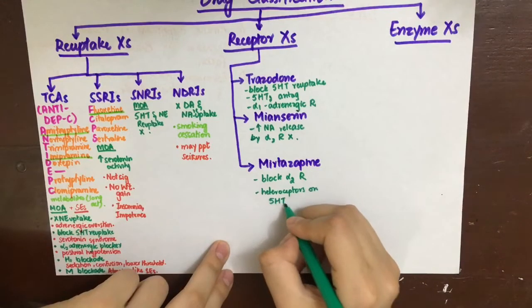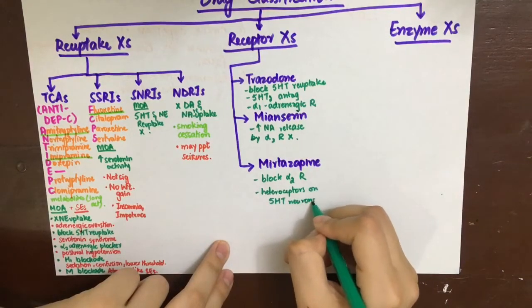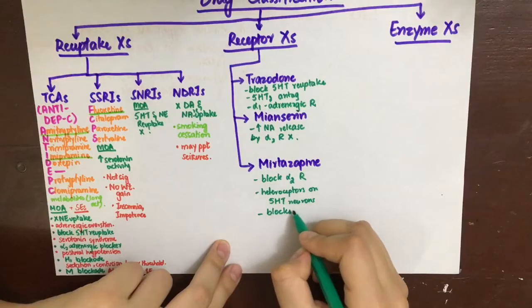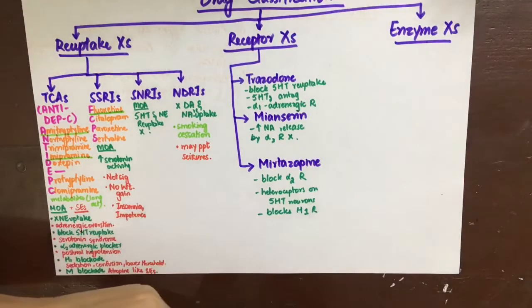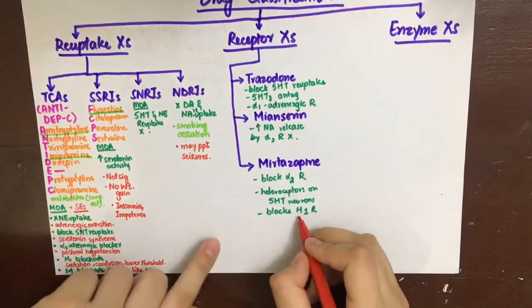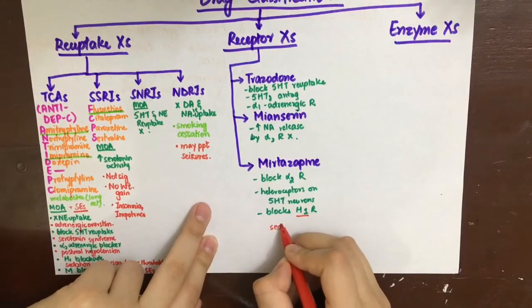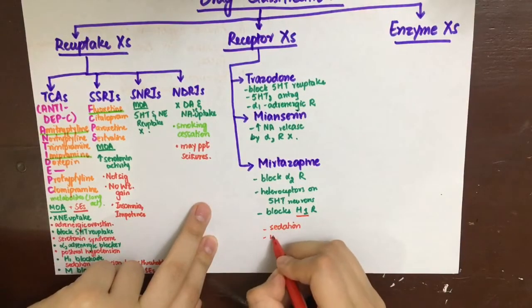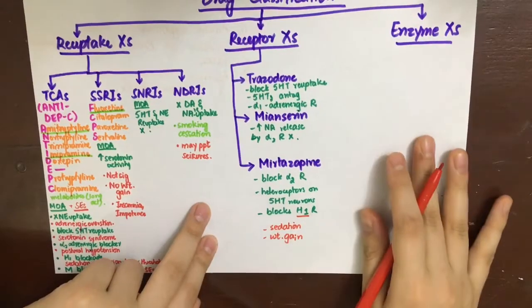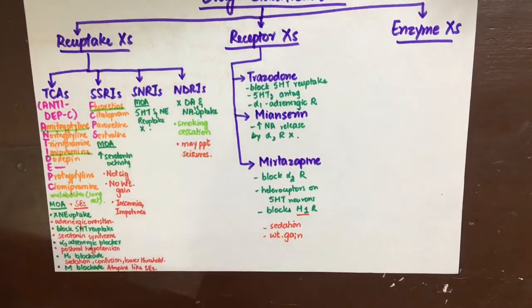Lastly, mitazapine acts by blocking alpha-2 receptors, or autoreceptors, increasing noradrenaline release, and also 5-HT2 receptors on the neurons, increasing serotonin release. They also have an action on blocking H1 receptors and thus cause sedation. They also cause weight gain like the TCAs.